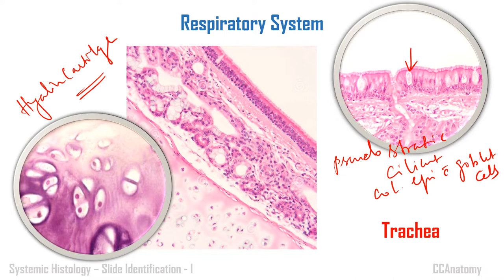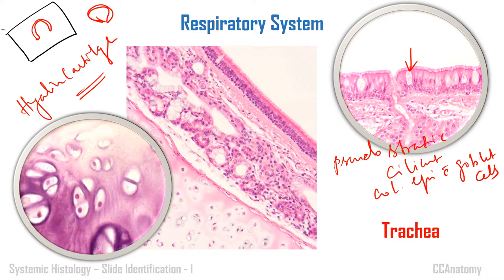For easy identification of the trachea slide, I strongly recommend looking at how the tissue appears. The trachea will typically show a C-shaped cartilage; if it is collapsed it will appear almost flattened. You can appreciate this kind of appearance microscopically when you see the slide directly. This is the slide identification feature for trachea.